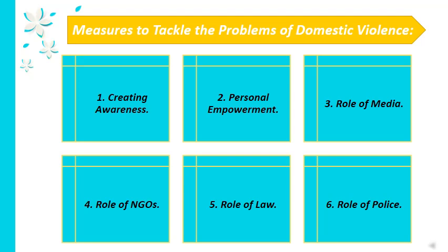The fourth measure is the role of NGOs. Non-governmental organizations play a significant role in dealing with cases of domestic violence. There are NGOs that specifically work to support women, children, disabled persons, transgender persons, men and the elderly in distress. Often such NGOs are backed with services of legal professionals and the police department, and together they help to get justice for the victims of domestic violence.